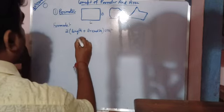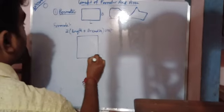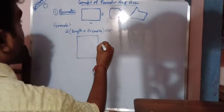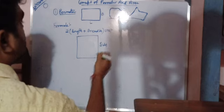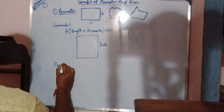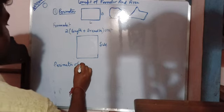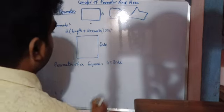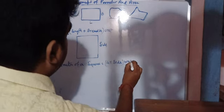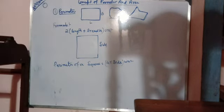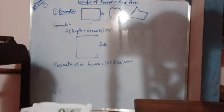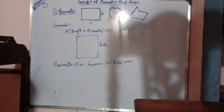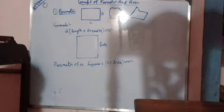Next is the perimeter of a square. For a square figure, all sides are equal. The perimeter of a square is equal to 4 into side — whatever the length of the side is given, multiply it by 4.